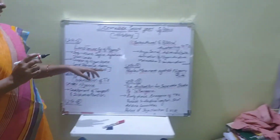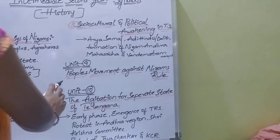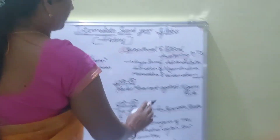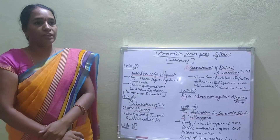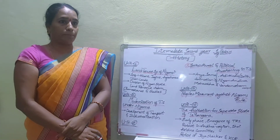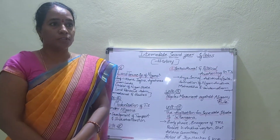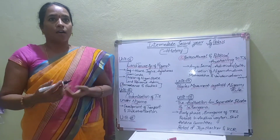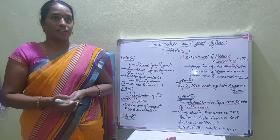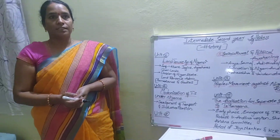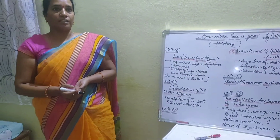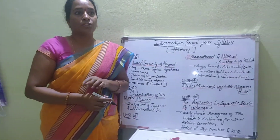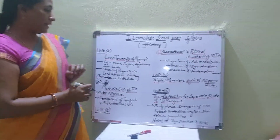The ninth unit is people's movement against Nizam's rule. We come across the people's movement against Nizam's rule, including the Telangana peasant armed struggle and tribal revolts, police action, integration of Hyderabad State into the Indian Union, and the formation of Andhra Pradesh.